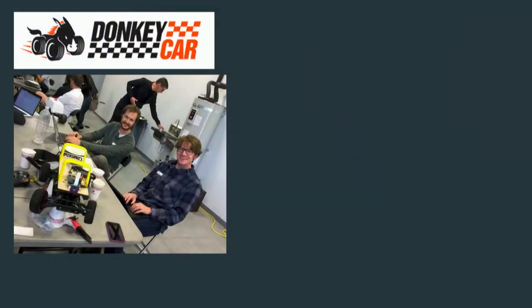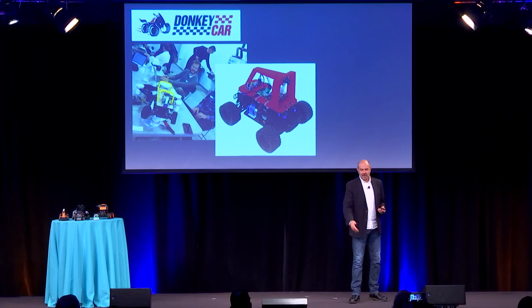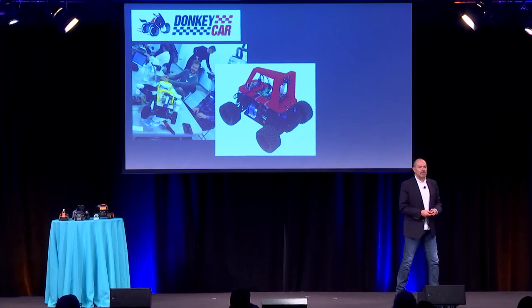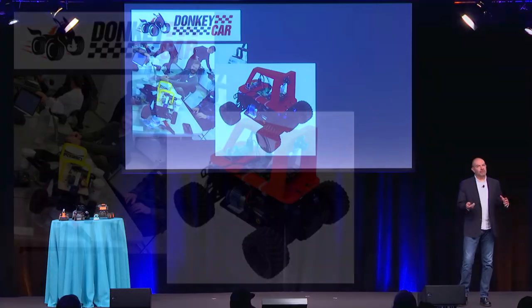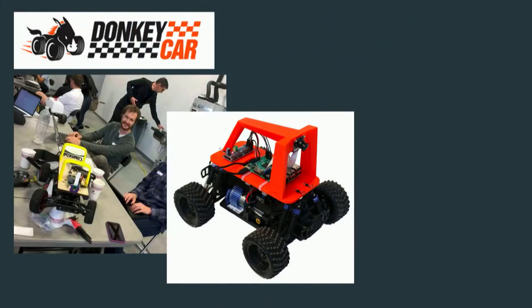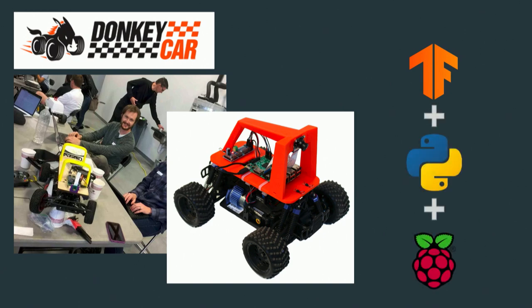It basically involves some standard platforms. One of them is called Donkey Car — you'll see a tutorial on that in the next session. This is end-to-end deep learning using behavioral cloning. Behavioral cloning means you drive it manually around the track, it gets a correlation between what it sees and the inputs you've given it, then it learns from that. You send the data up to the AWS cloud, it learns, then attempts to replicate that on its own. They look like an RC car but with a camera and embedded processor. We do the learning in the cloud where we have compute power, then run the model locally using TensorFlow, Python, and Raspberry Pi.